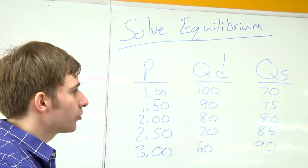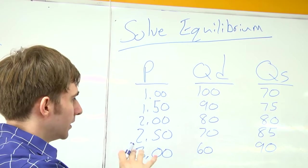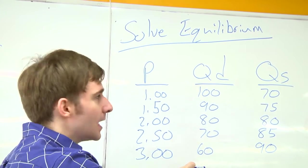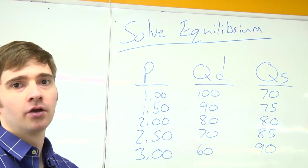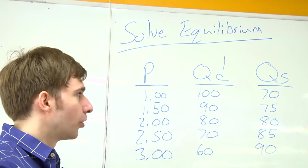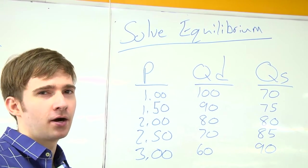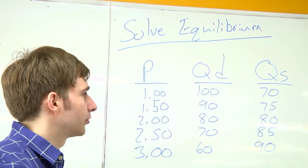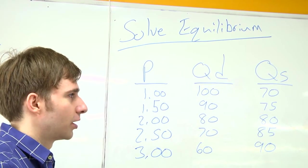The first thing we want to do is solve for our demand equation and our supply equation so that we can find the equilibrium quantity and price. So pause your YouTube video now and go ahead and try and solve for equilibrium.